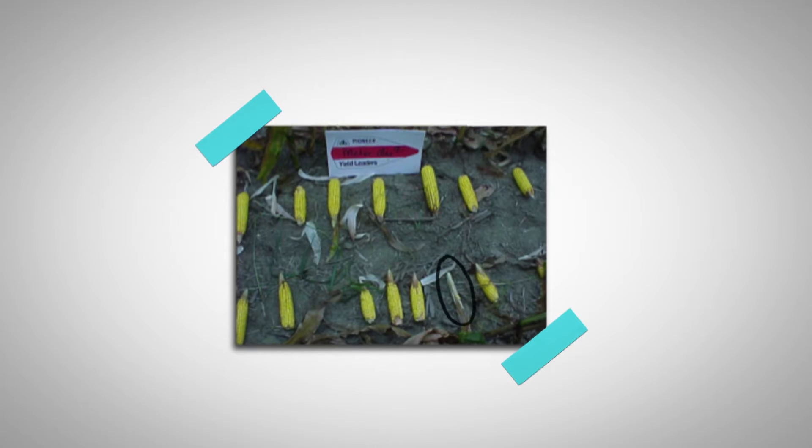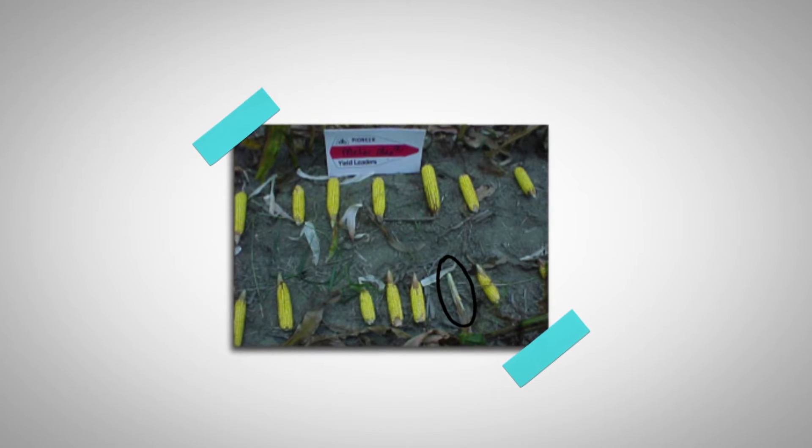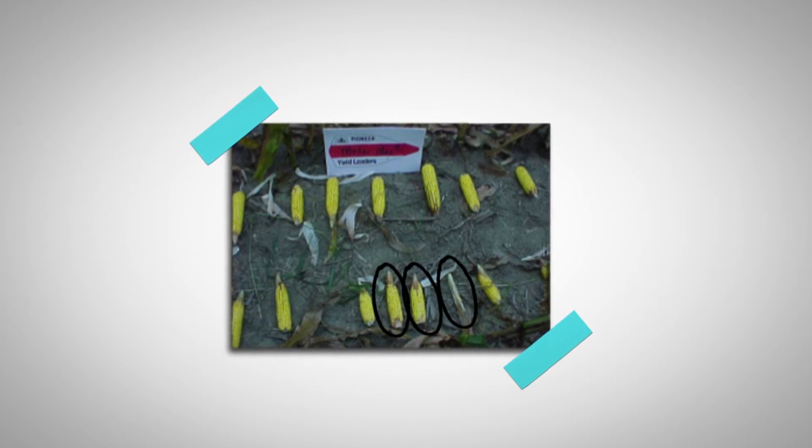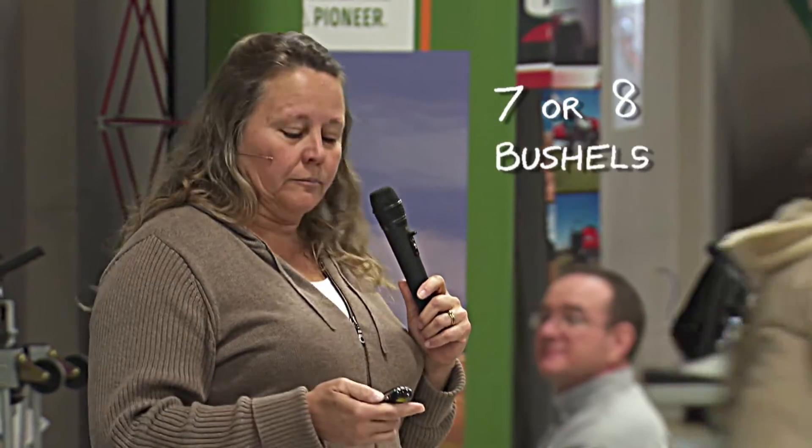Down in the bottom we've got one completely with no kernels, and we've got two that have lost about a third of their ear. The yield result in this particular field was about seven or eight bushels difference in yield just by accurately placing that seed in the field.